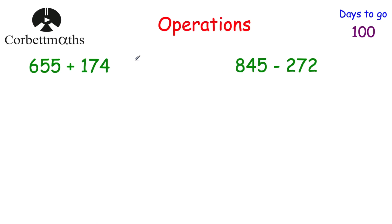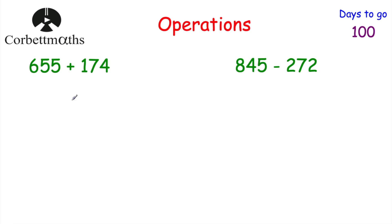Let's have a look at our operations. I'm going to go through some examples. If you want to pause and try the addition and subtraction yourself first, feel free to do so, then check your answers in a second. Alternatively, you can watch me do it and there are some for you to try after. So let's have a look at our first addition: 655 plus 174. Whenever we're doing an addition like this we want to line up our numbers in columns.